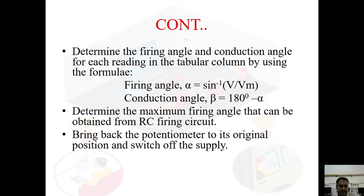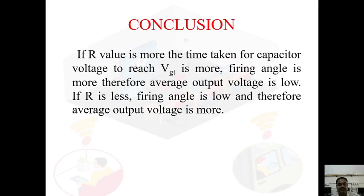Determine the firing angle and conduction angle for each reading using the formulae: alpha = sin⁻¹(V/Vm) and beta = 180° minus alpha. Determine the maximum firing angle obtainable from the RC firing circuit by varying the resistance. Finally, bring the potentiometer back to its original position and switch off the supply. Conclusion: if R is more, the capacitor takes more time to reach VGT, so firing angle is more and average output is low. If R is less, firing angle is low and average output voltage is more.